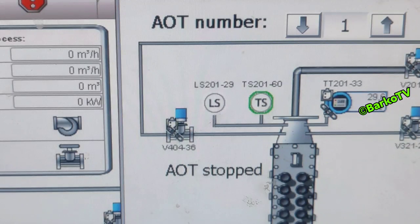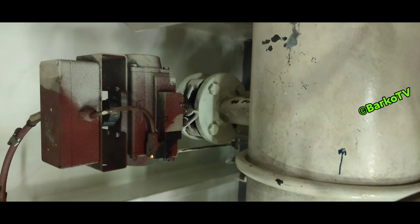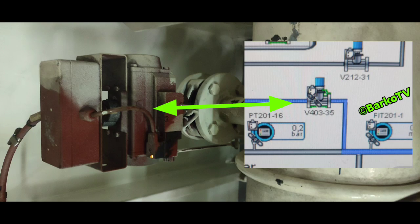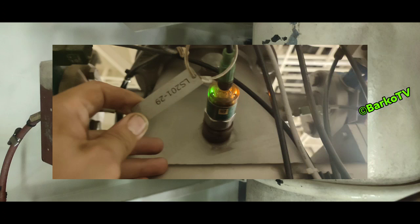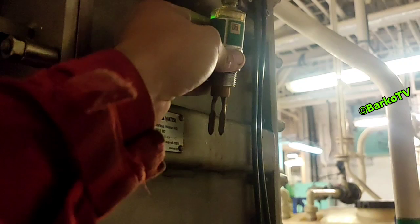This is the status indicator for the LS: when it lights up, it means it detects the water. Confirmed that the two level sensors are okay. The suspected valve in actual status is open, and we also have an indicator on the level sensor showing that water is detected — the AOT is filled because the indicator is lit.